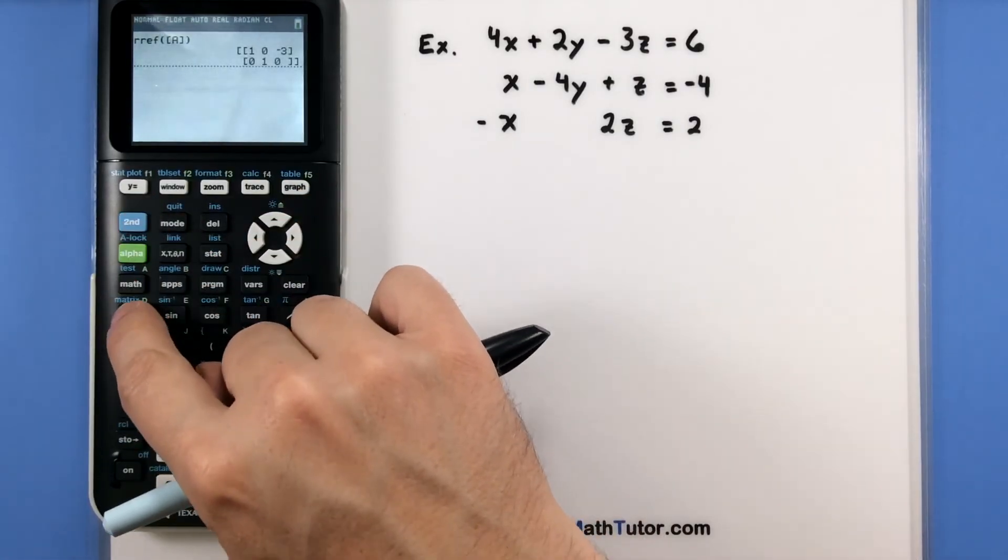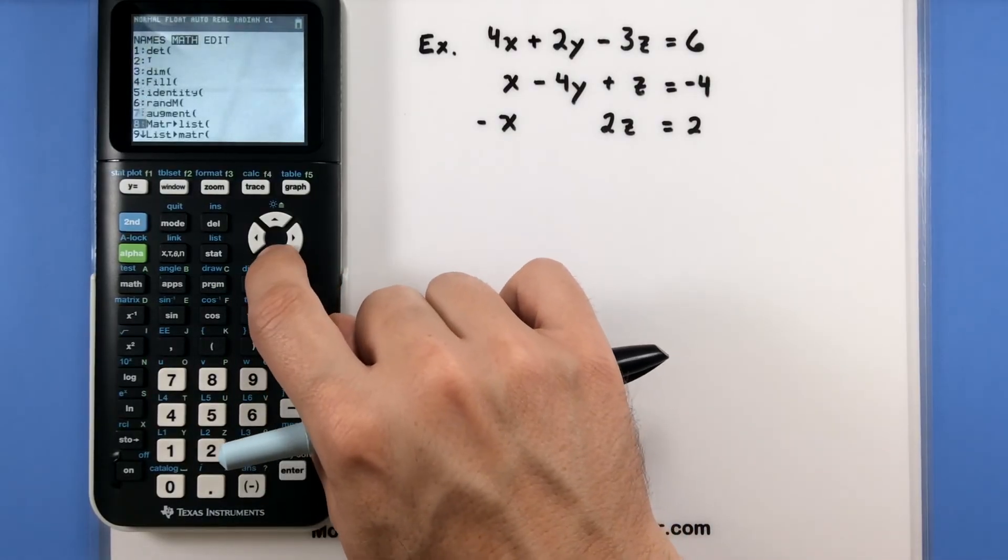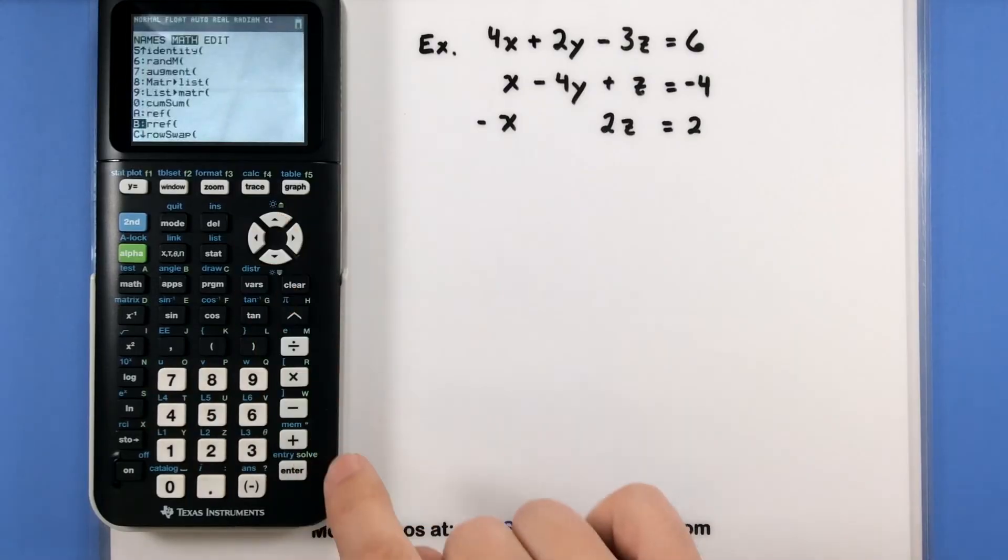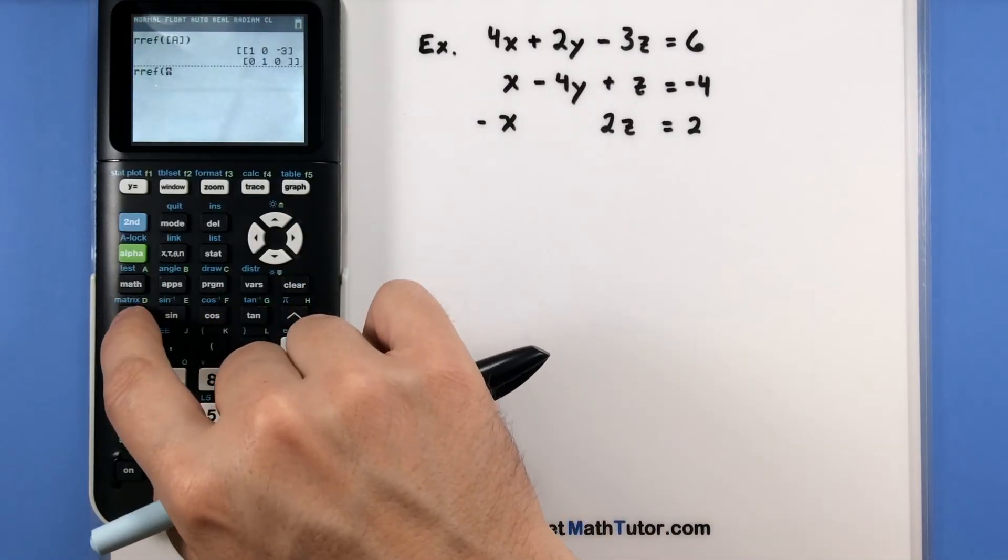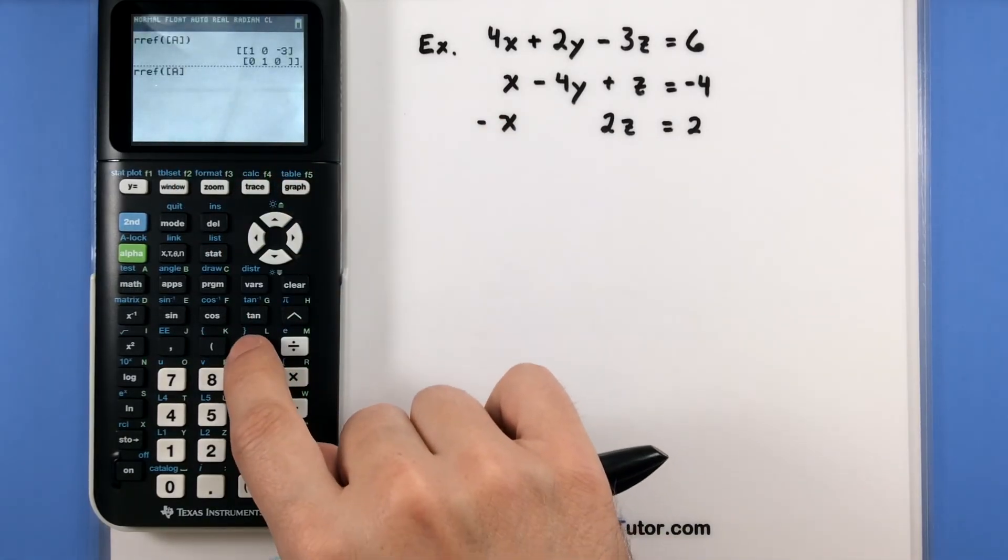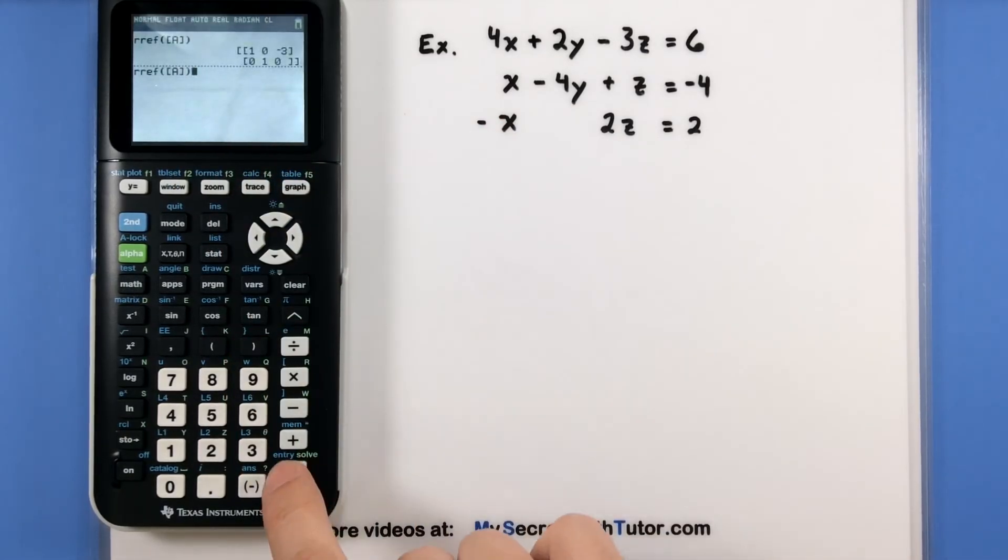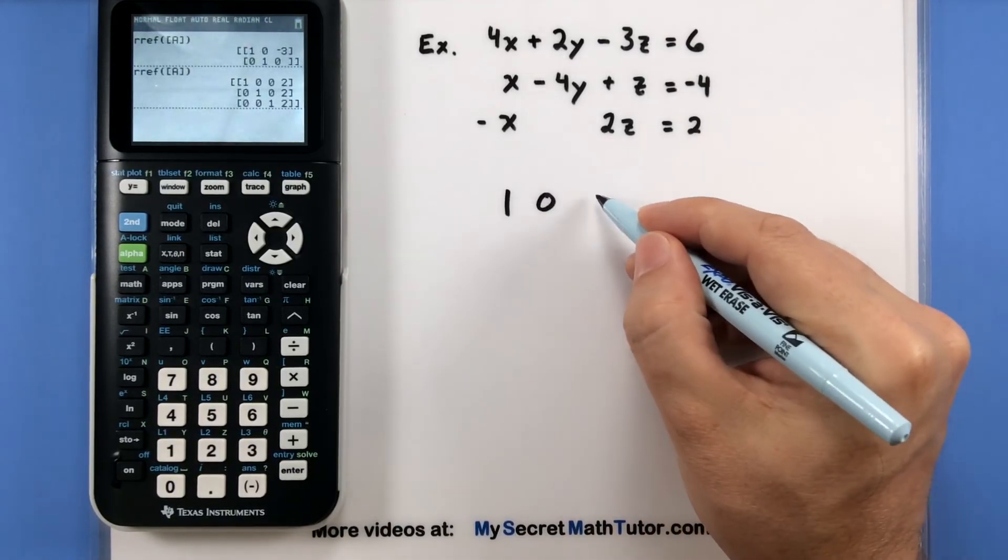Go to second matrix. Go into our math menu. Scroll all the way down looking for RREF. There it is. Now that that's on the screen, we can go second matrix. Select the first matrix where we have everything stored. Close our parentheses. Press enter and see what the matrix it spits out.